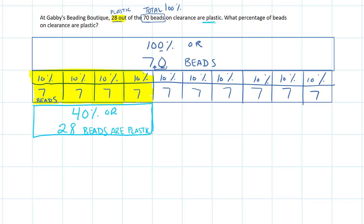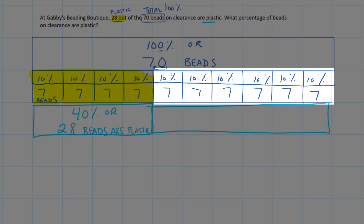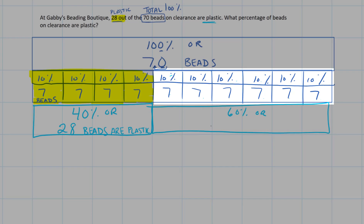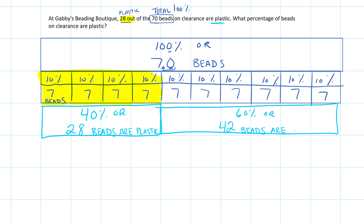Those 28 beads are plastic. That means the remaining percentage — counting on: 50%, 60% — corresponds to beads: 35, 42. So 42 beads are not plastic.